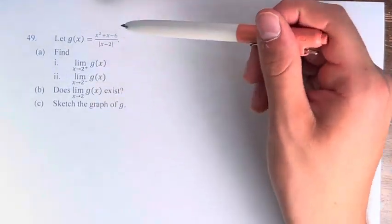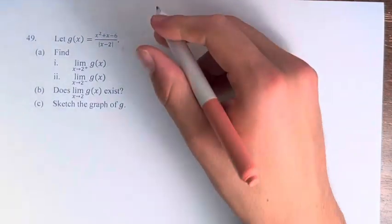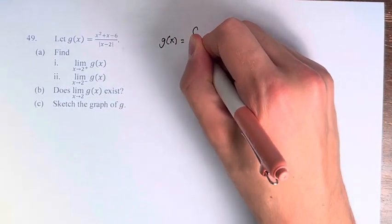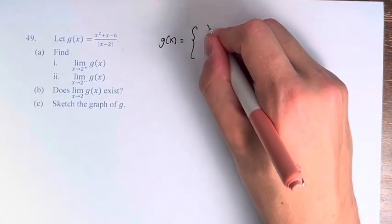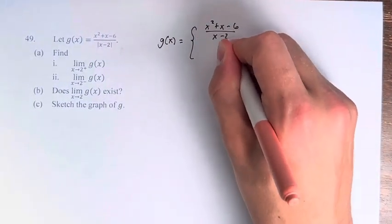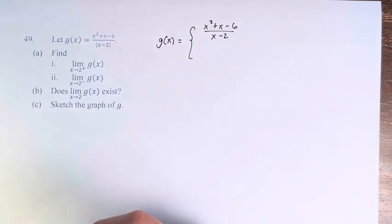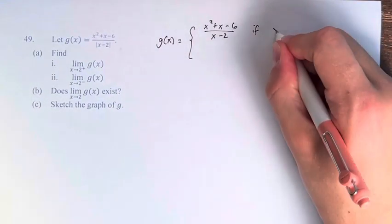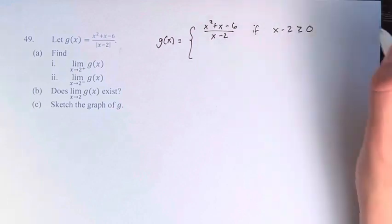So in order to find a limit, we have to get rid of the absolute value first. So we can say that g of x equals x squared plus x minus 6 over x minus 2, with just the absolute value dropped, if x minus 2 is greater than or equal to 0.